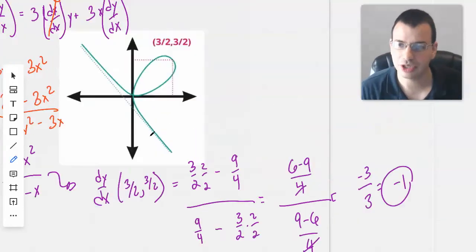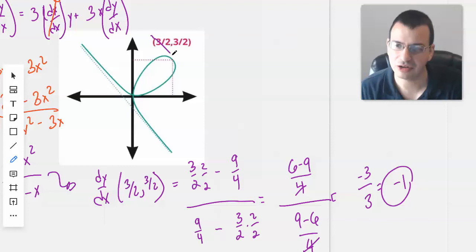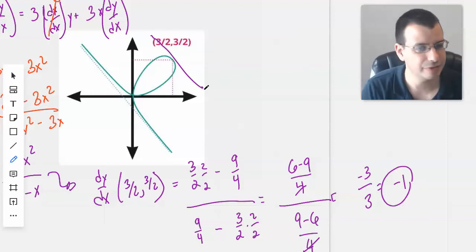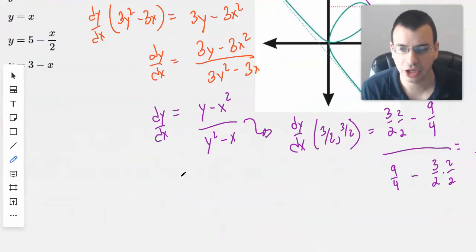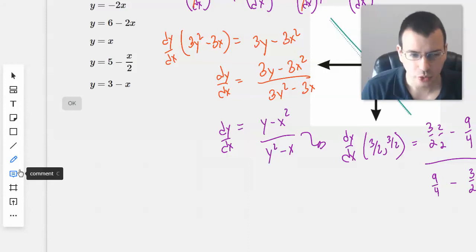Which kind of looks like what we would expect here. We're like okay, everything looks very symmetrical, probably going to be negative 1. So that seems like a reasonable answer, possibly even correct.